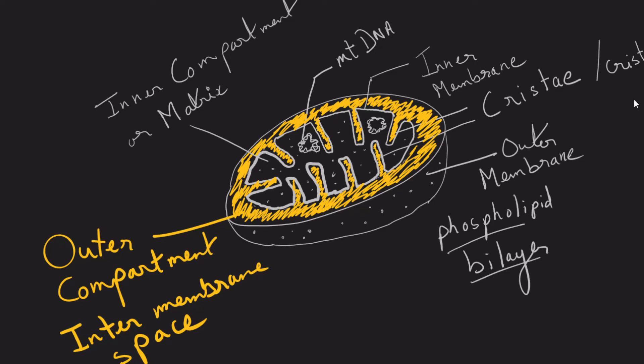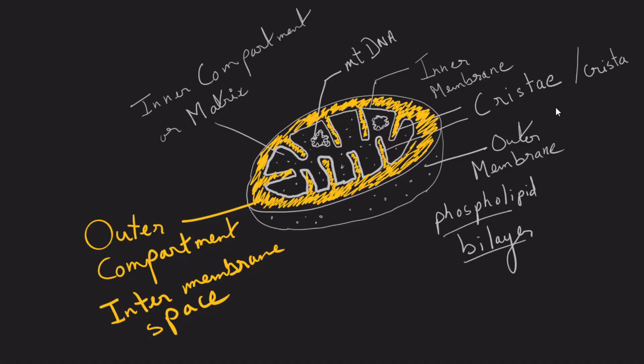Besides DNA, the matrix will also contain certain enzymes that are involved in the metabolic activities of the cell, especially cellular respiration, and also certain ribosomes.